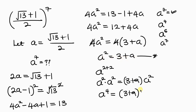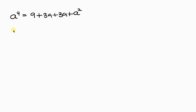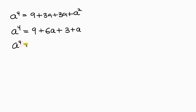Expanding: a to the 4th equals 3 times 3, which is 9, plus 3a, plus a times a, which is a squared. Substituting a squared equals 3 plus a, we get 9 plus 3a plus 3 plus a, which simplifies to a to the 4th equal to 12 plus 7a.